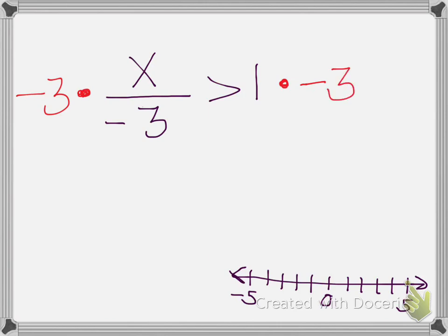And so when I multiply this side over here by negative 3, it's going to cancel out the number in the denominator, bring down your x. And over here on the right side, 1 times negative 3 equals negative 3.